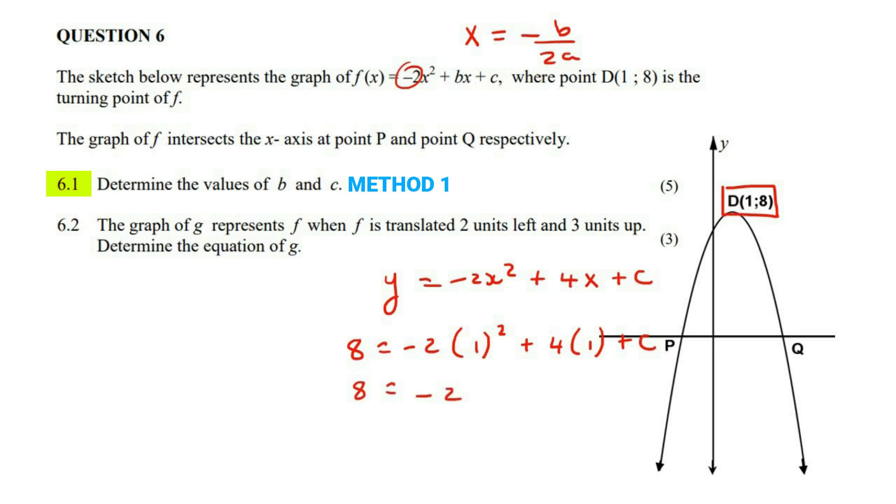And then we can solve for c. So eight is equal to negative two plus four plus c. And if you solve for c, you should eventually get six. So b is equal to four, and then c is six.